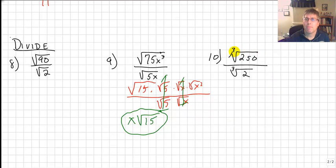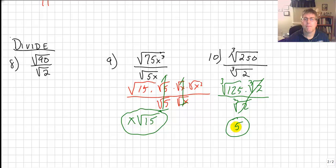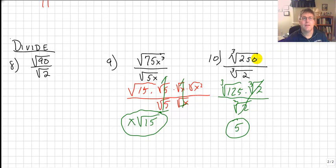Problem 10 is a little different because we've got perfect cubes — I'm looking for perfect cube factors of 250. I can take a cube root of 2 out of the numerator, leaving the cube root of 125 times the cube root of 2, all over the cube root of 2. The cube roots of 2 simplify, and the cube root of 125 is 5. So that's our final answer. Hopefully you can use the skills from problems 9 and 10, apply them to number 8, bring that to class, and I will see you in class.